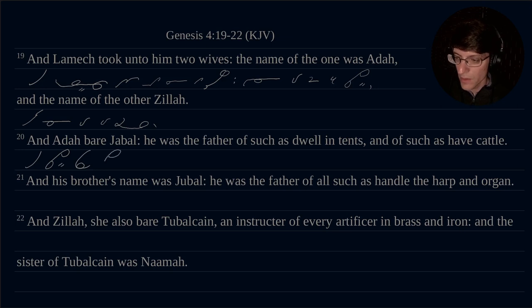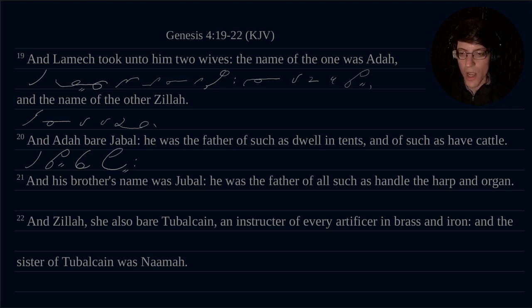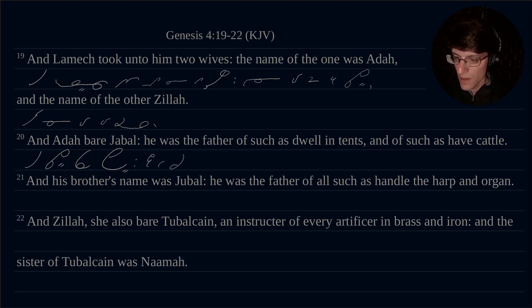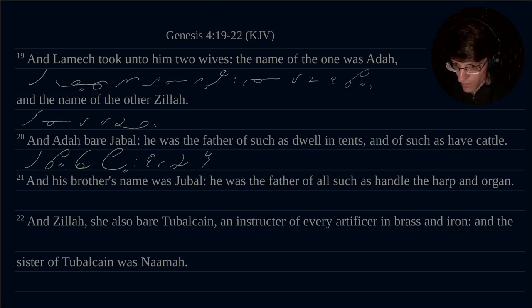So we do a Yah, which is an elongated circle. Yabal. He was the father of such as dwell in tents — of such as dwell in tents.